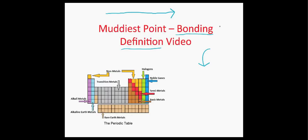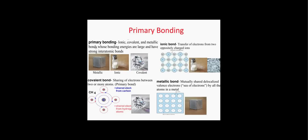Let's get down to business. Primary bonding is defined as bonds whose bonding energies are large and have strong interatomic bonds. There are three types of primary bonding: one, ionic; two, covalent; and three, metallic. If the concept of bonding energy is a little foggy, there is a separate video all about bonding energy and energy wells, and that link is right there.